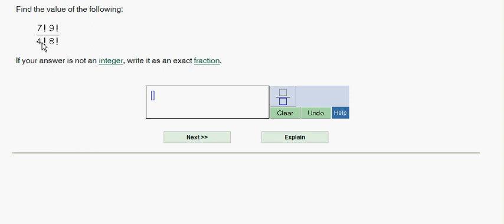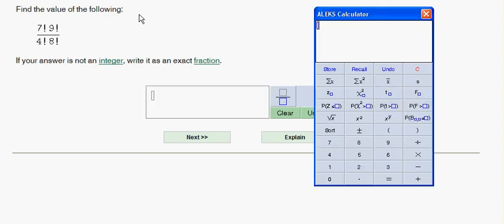Now what's going to happen there is that we're only going to cancel out the numbers from 4 on down in this top expression. So of the 7 factorial, we're going to have the 7 times the 6 times the 5 left over, but everything else below that will cancel because the 4 factorial is going to wipe out 4 times 3 times 2 times 1.